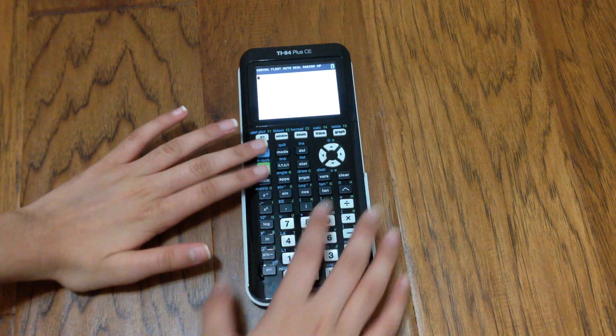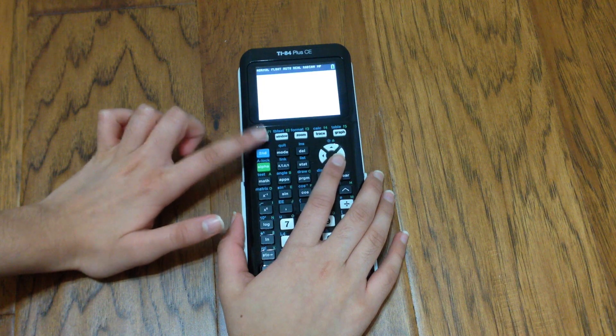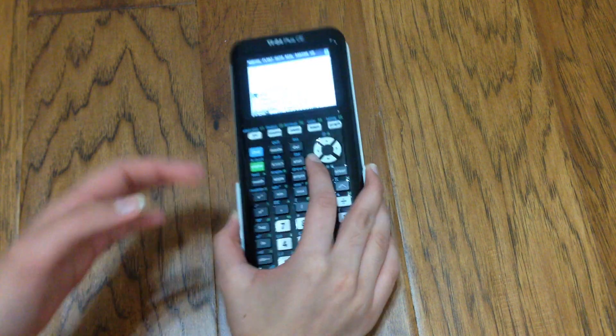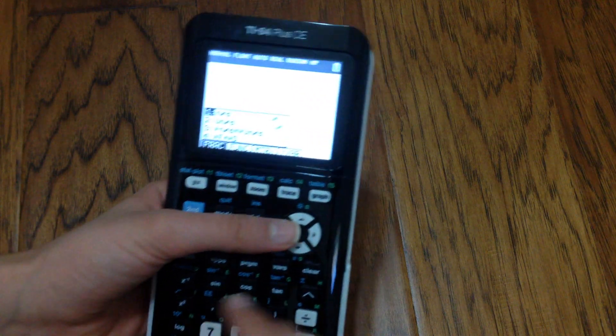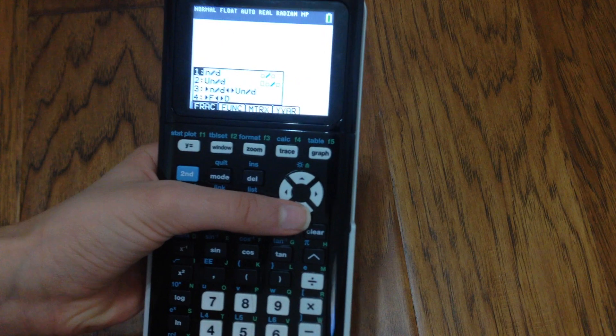First off, what we're going to do is go to alpha and then hit Y equals - this button right here. What it does is it pulls up this menu, and this is where you'll find all the different functions you can do with fractions.